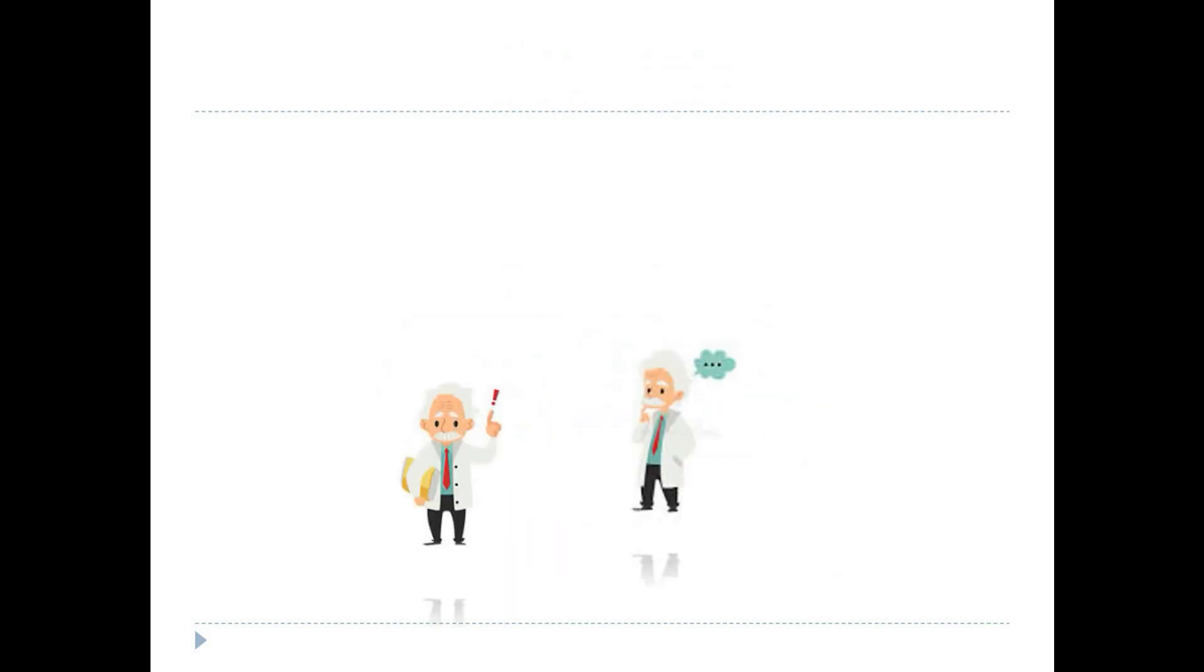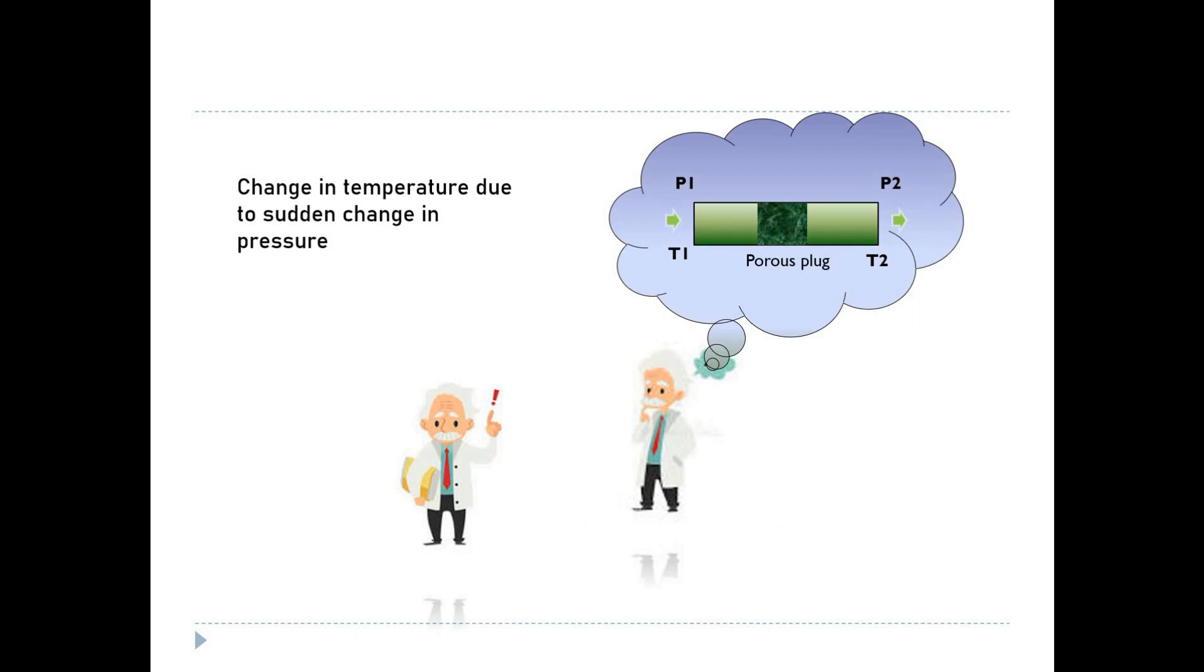In the year 1852, Joule and William Thomson found out that gases undergo change in temperature due to sudden change in pressure.